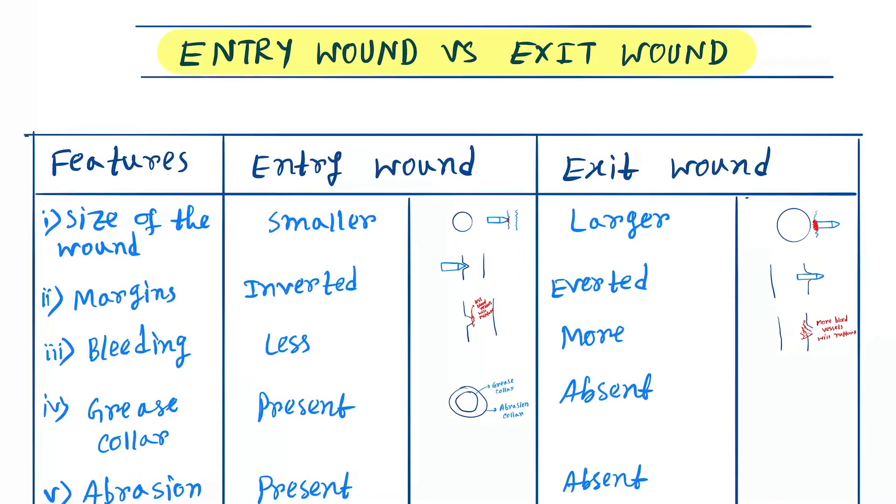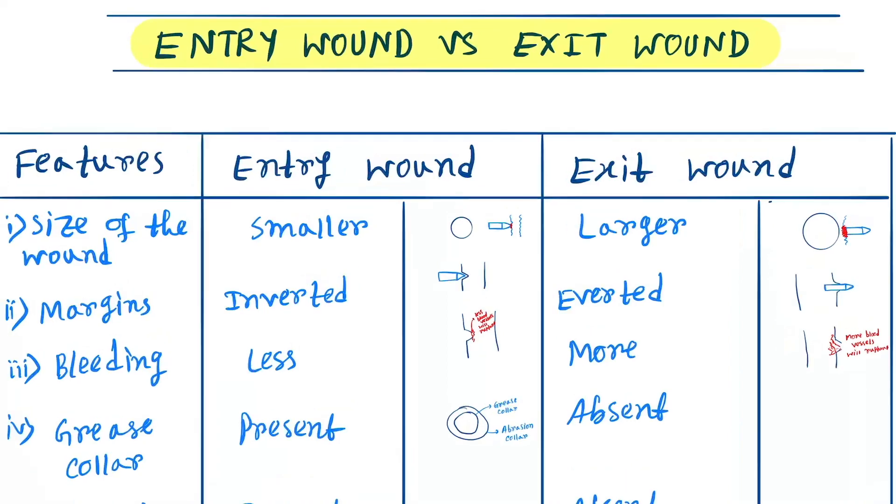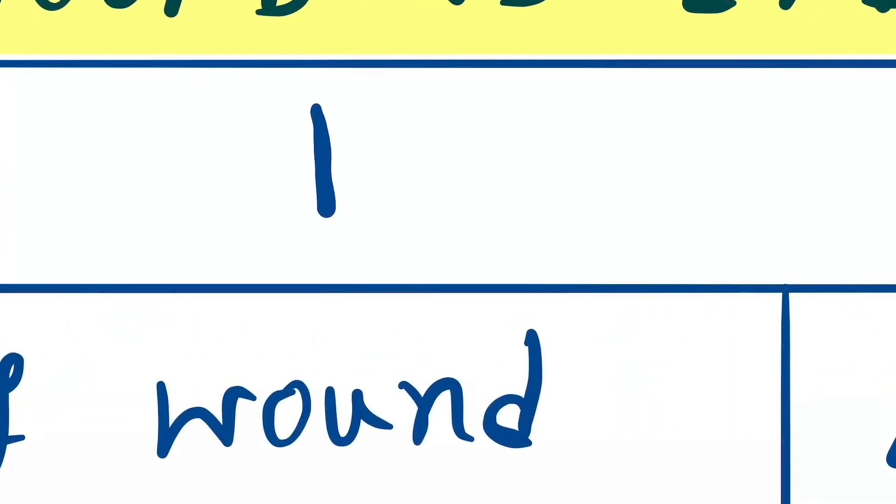Hello friends, today our topic is the entry wound versus the exit wound in a firearm injury. In a firearm injury, when the bullet enters the body wall, this is called the entry wound. When the bullet comes out from the body, it will cause the exit wound.